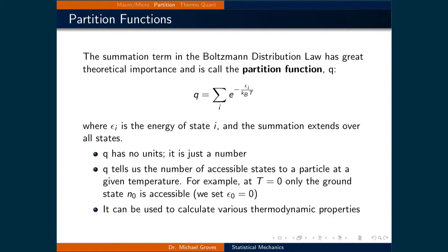The partition function tells us the number of accessible states to a particle at a given temperature. For example, at T equals zero, only the ground state n0 is accessible, and we set e0 to be equal to zero. Finally, it can be used to calculate various thermodynamic properties.